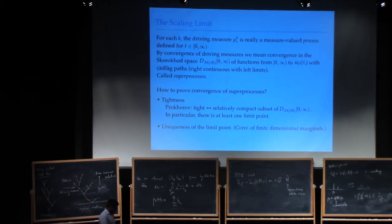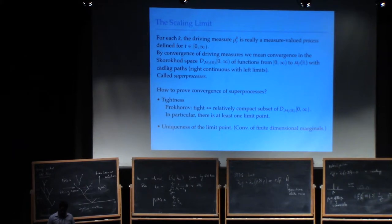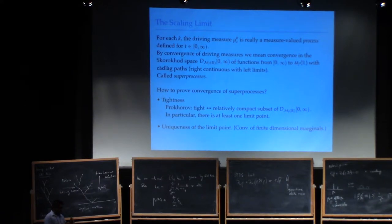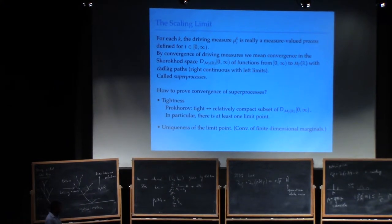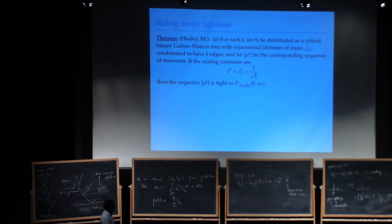It turns out that establishing tightness for this problem is actually remarkably straightforward. Whether we're doing Dyson-Brownian motion or just coulombic repulsion — interacting particles — it doesn't matter that much, because there's a very neat and simple estimate. The tightness proof is very much in line with classical tightness for the branching process itself.